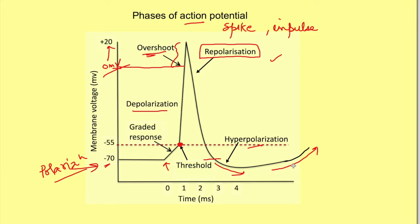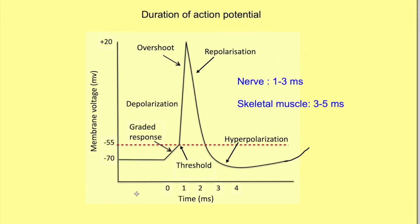We have focused on the change in membrane voltage, but let's consider the time. The time taken for the action potential is very short. In a neuron the duration of action potential is only around 1 to 3 milliseconds. In a skeletal muscle it ranges from 3 to 5 milliseconds. When drawing this diagram, please also focus attention on the time frame in which you are drawing the phases of the action potential.